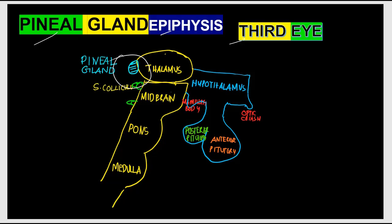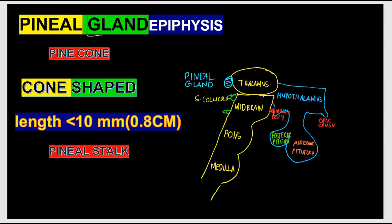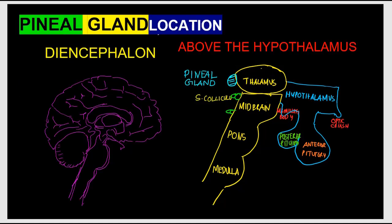The word 'pinea' means pine cone, and this gland is a small cone-like structure with a length below 10 millimeters, around 0.8 centimeters, reddish-gray in color, and weighing about 0.1 grams. It has a stalk called the pineal stalk. The pineal gland is part of the diencephalon of the brain — the interior part, below the cortex and above the midbrain of the brainstem.